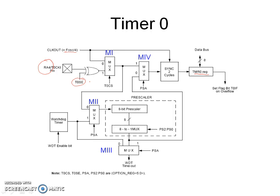When T0SE is 1, the output of the XOR gate is the complement of the logic level at the RA4 pin. The control input of M1 is T0CS, that is the Timer 0 clock source select bit. When T0CS is 0, the output of M1 is Fosc divided by 4. When T0CS is 1, the output of M1 is the output of the XOR gate, that is the logic level at RA4 pin or its complement depending on the T0SE bit.